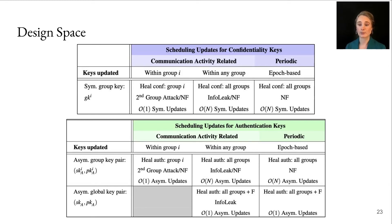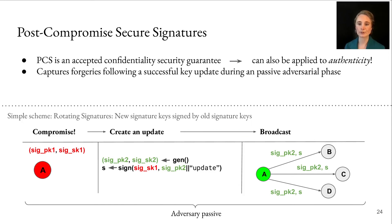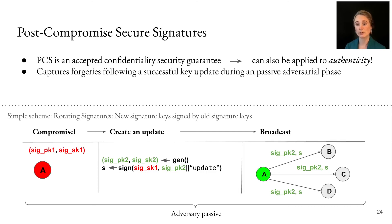This in turn begs the question of how we update those global signature keys. We take a closer look at the security needs for these types of updating signatures and define post-compromised secure signatures — PCS-SIG — as a security experiment. The general idea is that it captures forgeries following a successful key update during a passive adversarial phase. The security experiment details are a little complex for one slide, so we'll give an intuition with a particular construction from our paper. There are many possible constructions that can meet our security definition, so this is just one example.